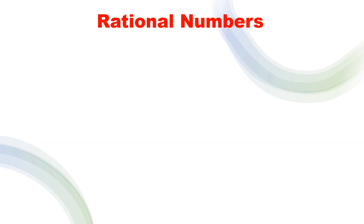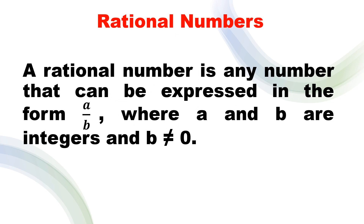Let's talk about rational numbers first. A rational number is any number that can be expressed in the form a over b, where a and b are integers and b is not equal to zero. So when we are pertaining to rational numbers, we have a fraction — a divided by b. Make sure b is not equal to zero.